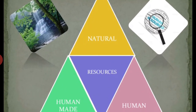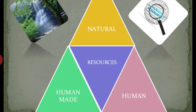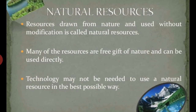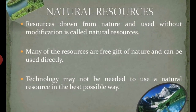Resources are actually of three types: first is natural resources, which we get from nature; second is human-made resources, which humans make for themselves; and third is human itself, which is counted as the ultimate resource.